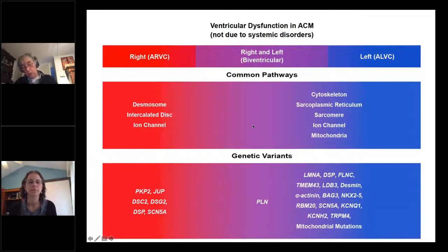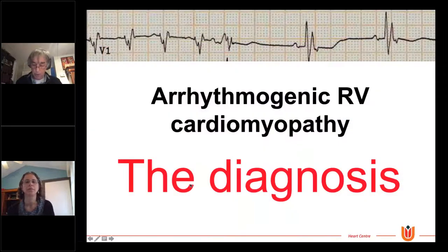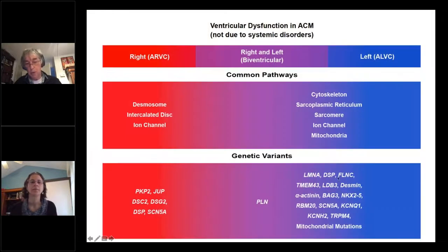Genetic variants, which will be discussed in detail by Cynthia, are here. Some of them are rather specific for the right side cardiomyopathy, and others are either found in the isolated left or both.